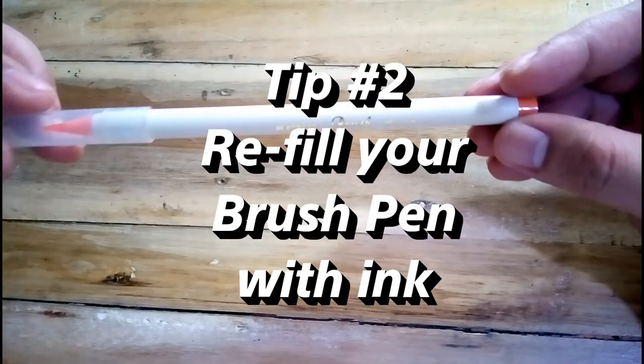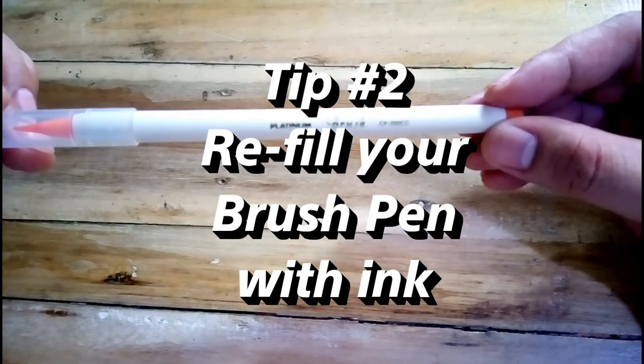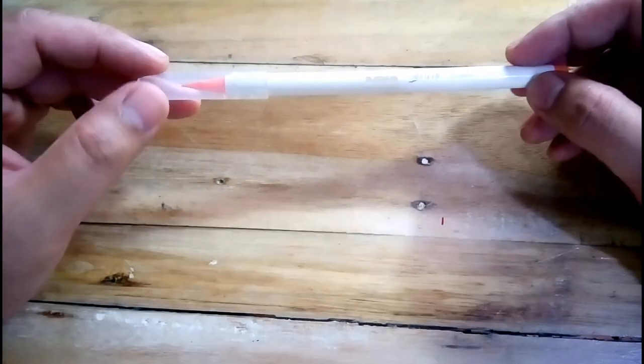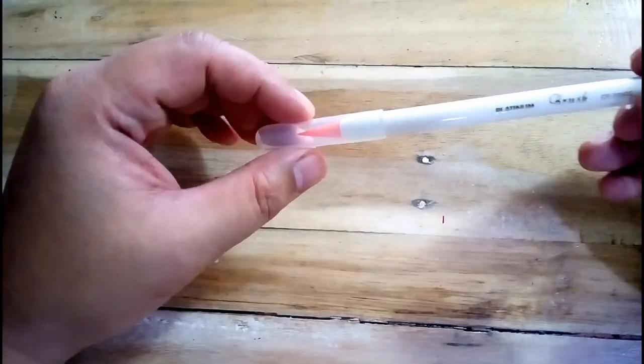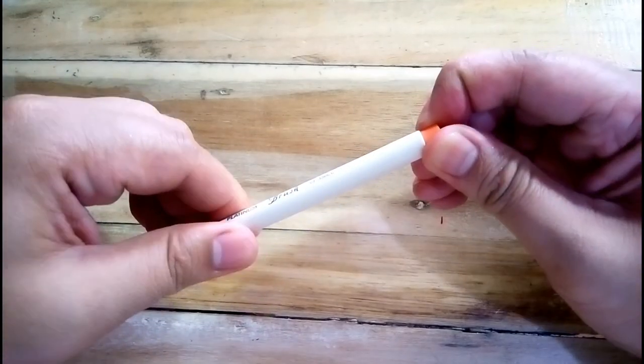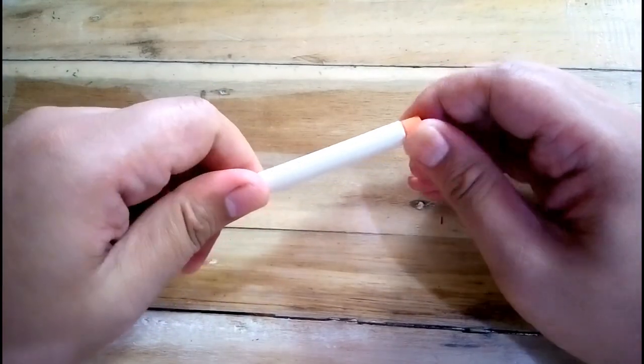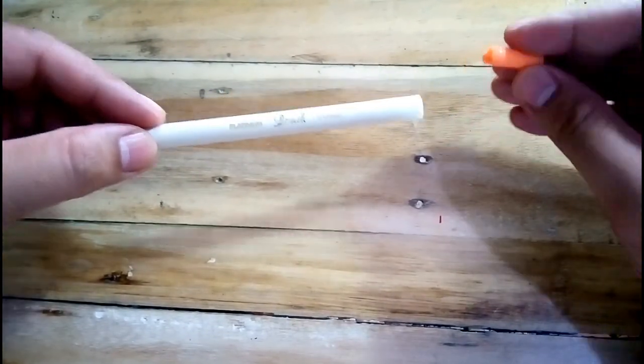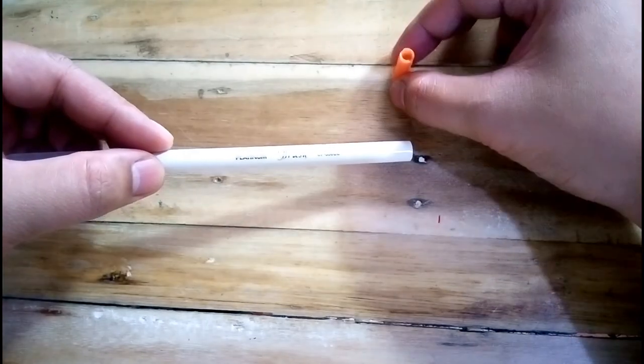For tip number two, we will again use the Platinum brush pen. Again, all we need to do is remove the cap and take out the cartridge.